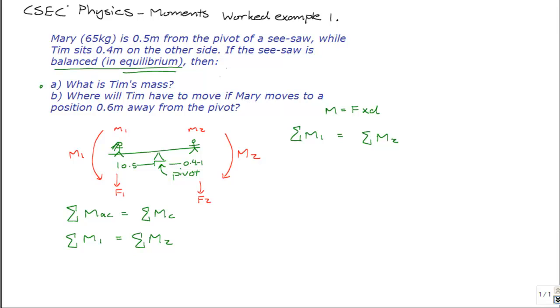So, the anti-clockwise moments, or the moment of the force due to Mary, should be equal to her weight, W1, or F1, let me stick with F, times her distance from the pivot. Now, weight, which is this F we're talking about, is equal to an object's mass times gravitational acceleration, and G is approximately equal to 10 N per kilogram.